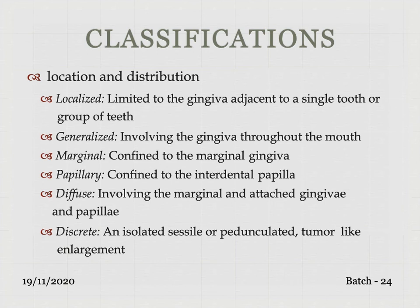Localized is classified based on the number of teeth involved — it limits to the gingiva adjacent to a single tooth or a group of teeth. Generalized involves the gingiva throughout the mouth. Marginal gingival enlargement confines only to the marginal gingiva, and papillary involvement confines only to the interdental papilla. Diffuse gingival enlargement involves marginal gingiva, interdental papilla, as well as the attached gingiva — when all three parts are involved, it is called diffuse gingival enlargement.